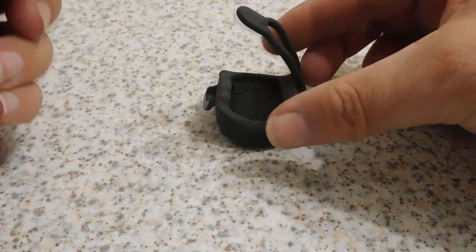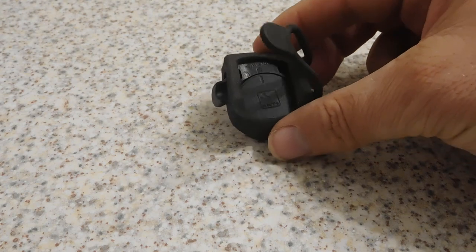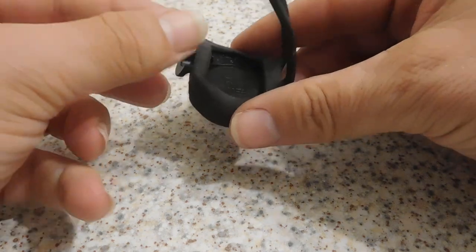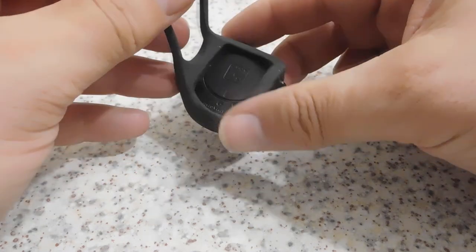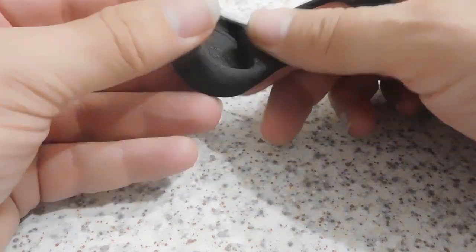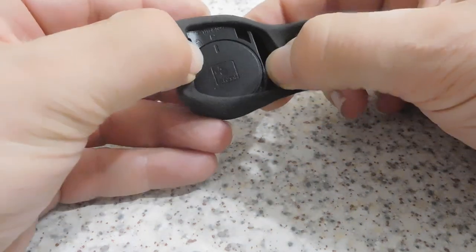In this video I'm going to show you how to change the battery in a Garmin Hub Speed Sensor. First thing you need to do is get your Speed Sensor and take it off your bike.